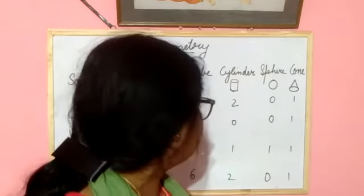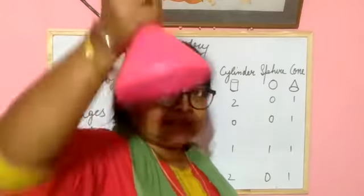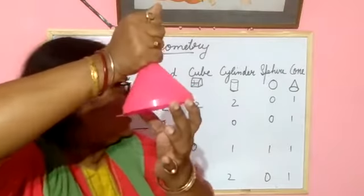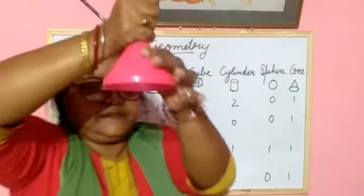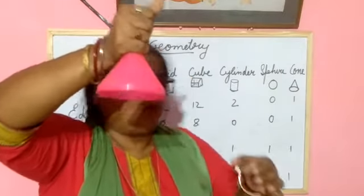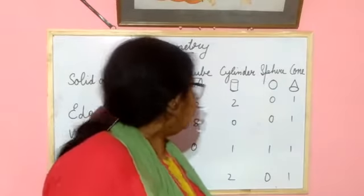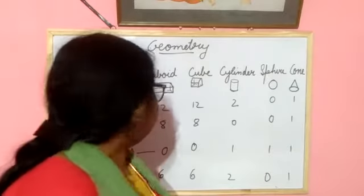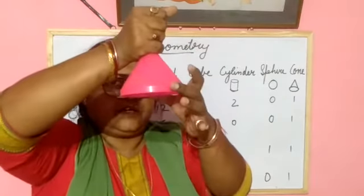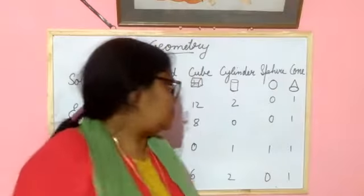Next one is the cone. You can see this is the shape of a cone. In a cone, how many edges are there? 1 edge. How many edges? 1 edge.